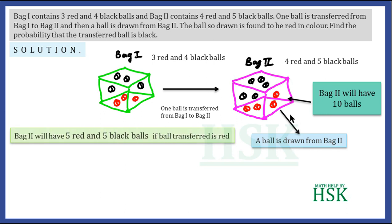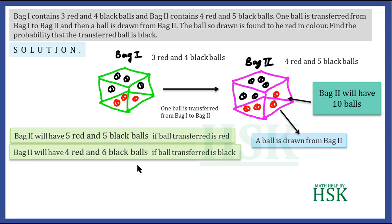There are two conditions which are possible. First, Bag 2 will have 5 red and 5 black balls if the ball transferred is red, because Bag 2 has 4 red balls and one red ball added makes 5 red and 5 black balls. Similarly, if the ball transferred is black, then Bag 2 is going to contain 4 red and 6 black balls.